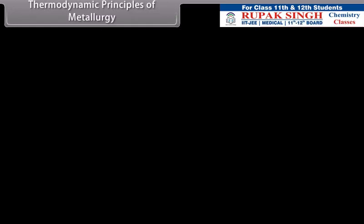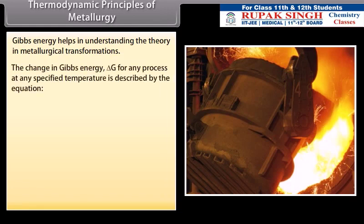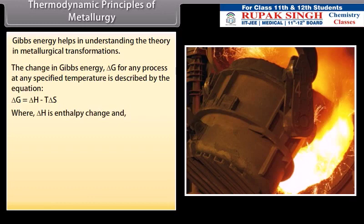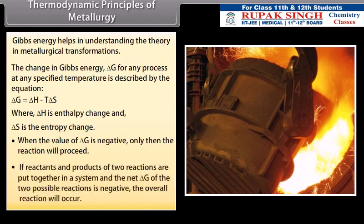Thermodynamic principles of metallurgy. Gibb's energy helps in understanding the theory in metallurgical transformations. The change in Gibb's energy ΔG for any process at any specified temperature is described by the equation ΔG = ΔH - TΔS, where ΔH is enthalpy change and ΔS is the entropy change. When the value of ΔG is negative, only then the reaction will proceed. If reactants and products of two reactions are put together in a system and the net ΔG of the two possible reactions is negative, the overall reaction will occur.